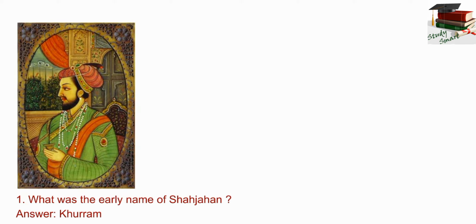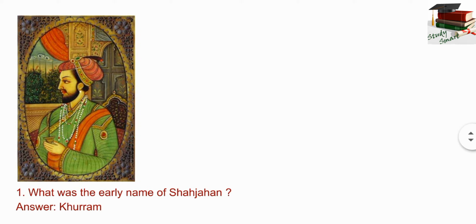Next question: Shah Jahan built the Moti Masjid at Agra. Now see important questions about Shah Jahan. First, what was the early name of Shah Jahan? The right answer is Khurram.